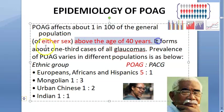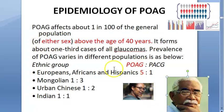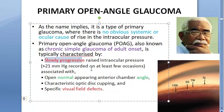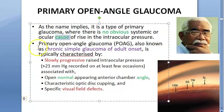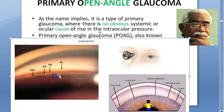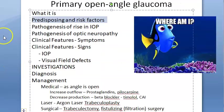POAG mainly affects African, European, and Hispanic populations. It affects males and females above 40 years. It is slowly progressive — patients lose a lot of vision without knowing it. There is no obvious systemic or ocular cause, which is why it is called primary. The anterior chamber angle appears normal, which is confirmed by gonioscopy.